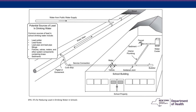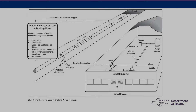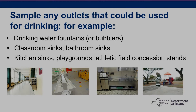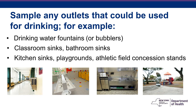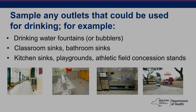Before testing for and correcting lead problems, evaluate the school building's plumbing system and assess the factors that may contribute to lead contamination. An evaluation should identify all outlets that are used or could potentially be used for drinking and/or cooking purposes. All identified outlets must be sampled for lead, including drinking water fountains or bubblers, classroom sinks, bathroom sinks, kitchen sinks, and athletic field concession stands. Based on this information, the school can develop a sampling plan, including assigning unique identification numbers to each outlet to be sampled.